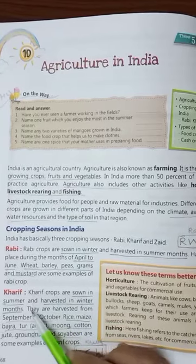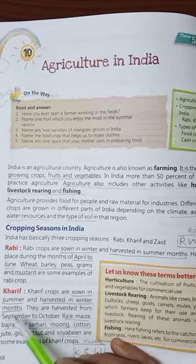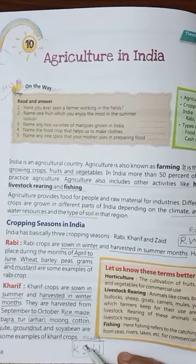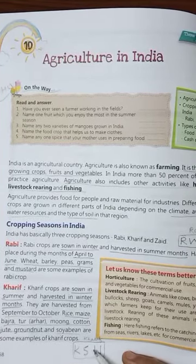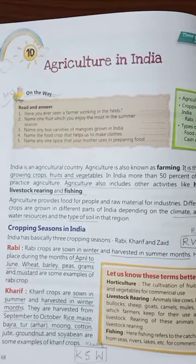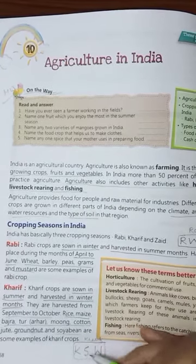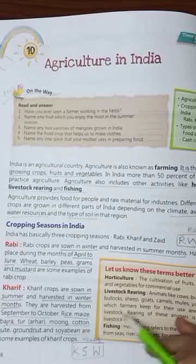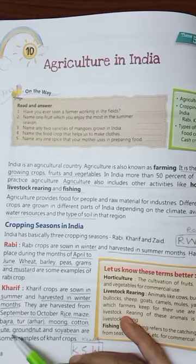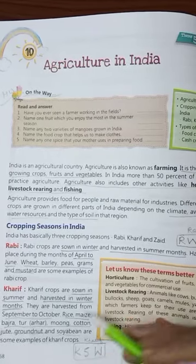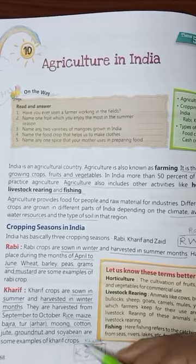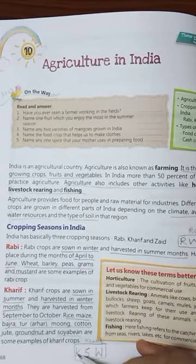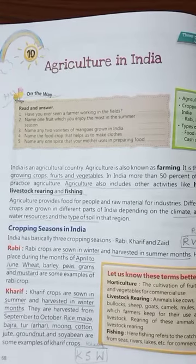Kharif crops are sown in summer and harvested in winter. You can remember it as KSW — Kharif, Summer, Winter. They are harvested from September to October. Examples of Kharif crops are rice, maize, bajra, tur (arhar dal), moong, cotton, jute, groundnut and soya bean.